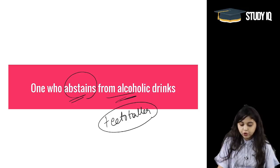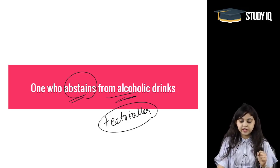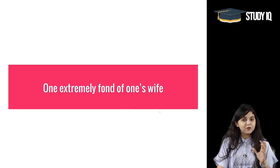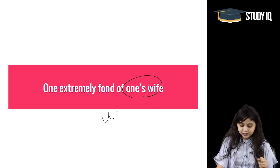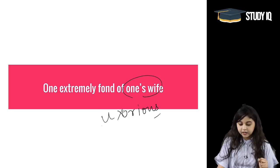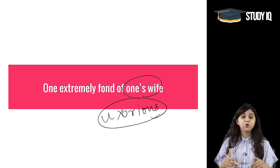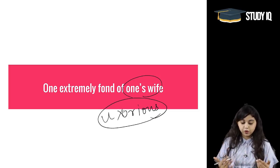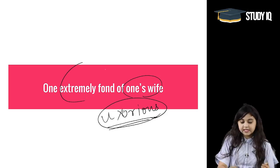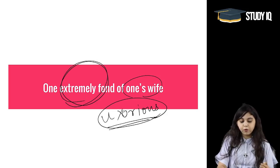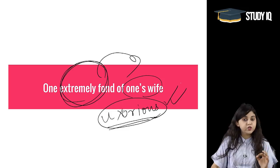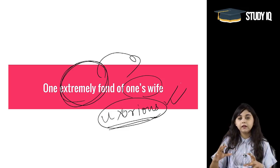One who is extremely fond of one's wife is called 'uxorious.' The killing of one's wife is called 'uxoricide.' Uxorious refers to a person who is very fond of his wife, and uxoricide means the act of killing one's wife.